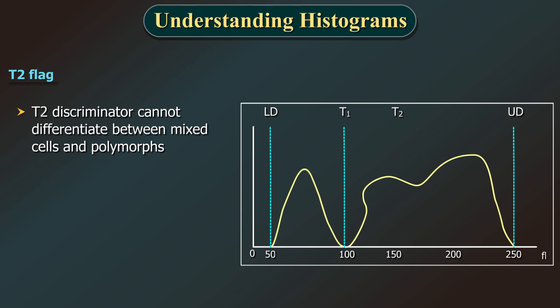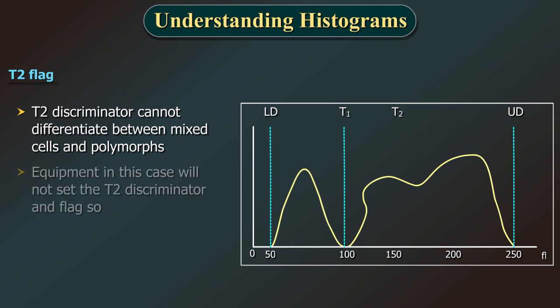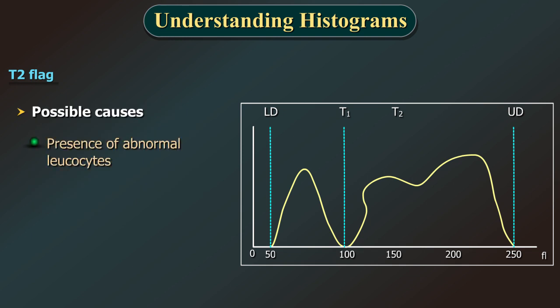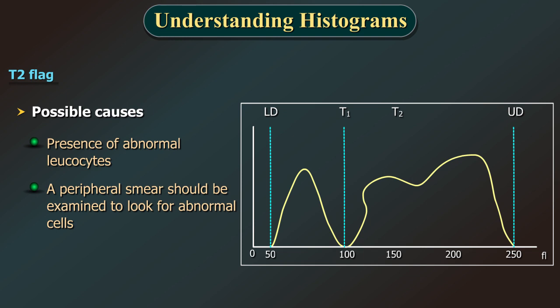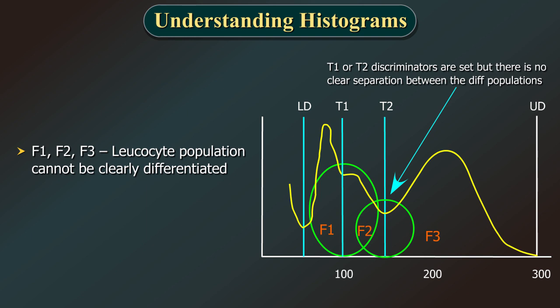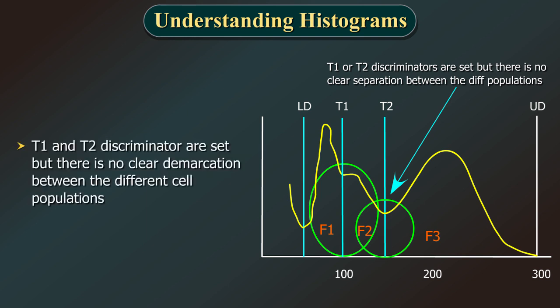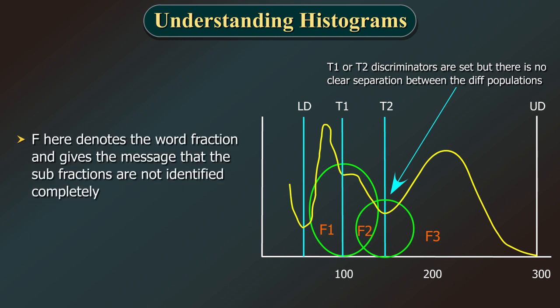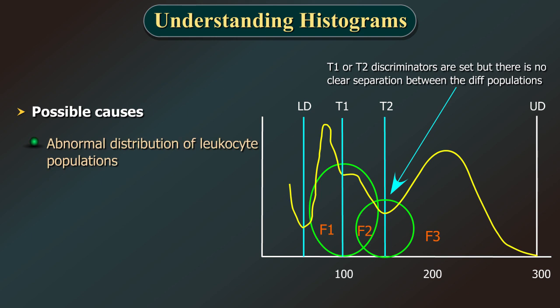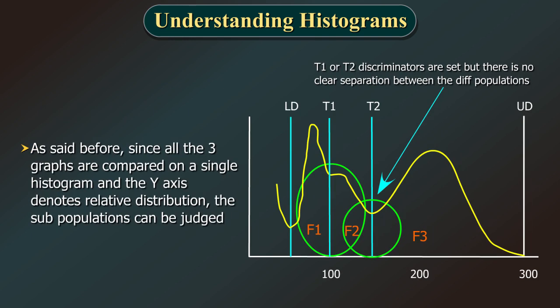F1, F2, F3 flags: the leukocyte population cannot be clearly differentiated. The T1 and T2 discriminators are set, but there is no clear demarcation between the different cell populations. 'F' denotes fraction and gives the message that the subfractions are not identified completely. Possible cause: abnormal distribution of leukocyte populations and abnormal leukocytes. Since all three graphs are compared on a single histogram and the y-axis denotes relative distribution, the subpopulations can be judged.